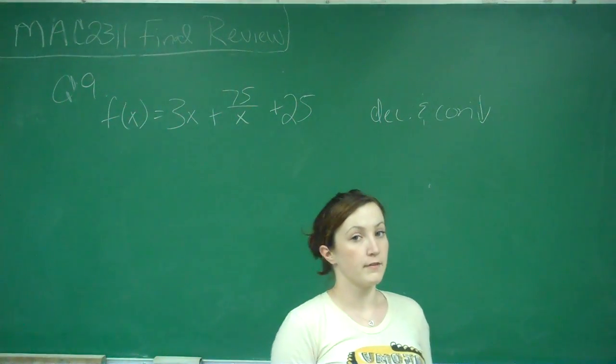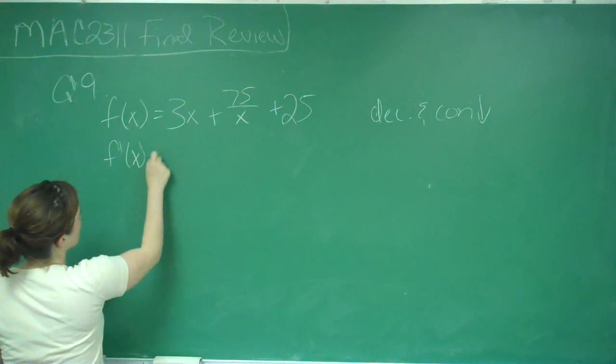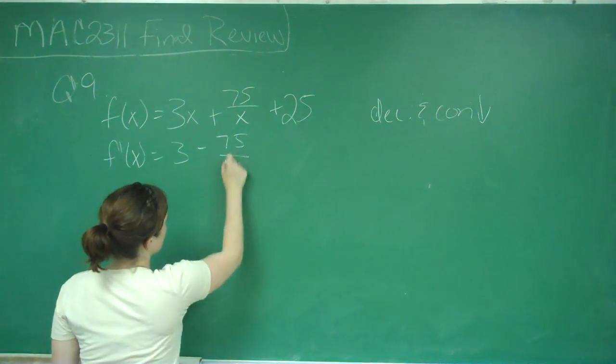So we're going to have to find the first and the second derivative. So the first derivative will be 3 minus 75 over x squared.